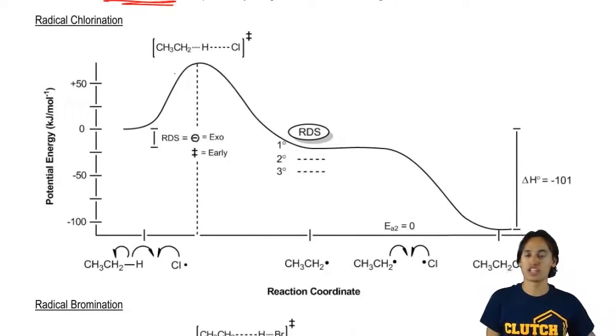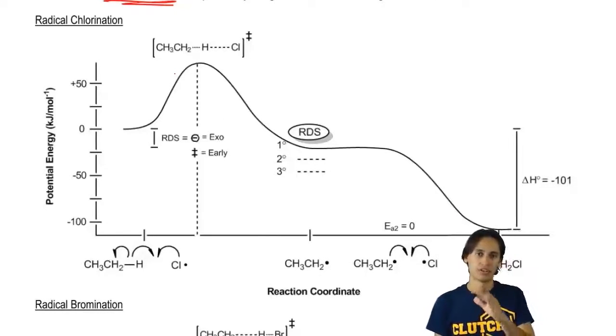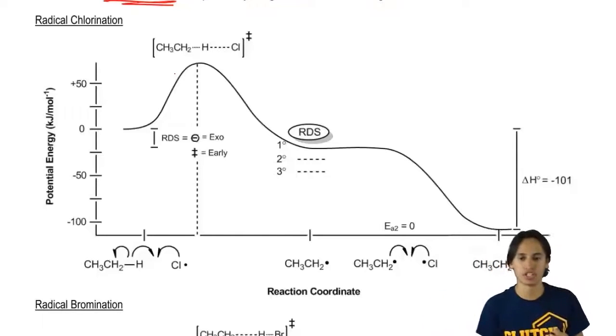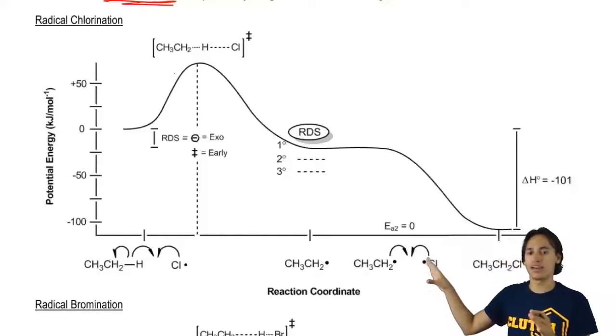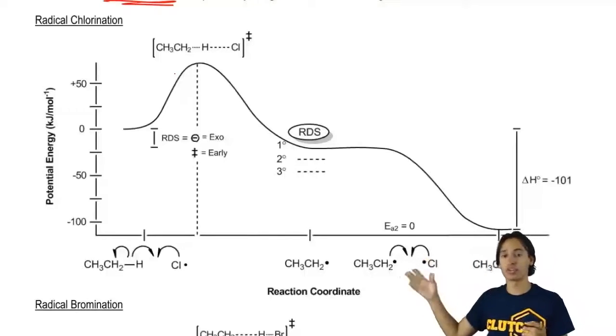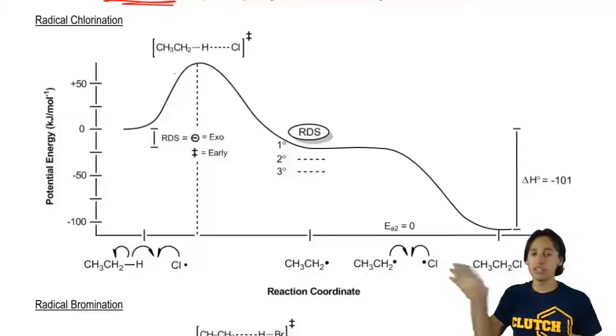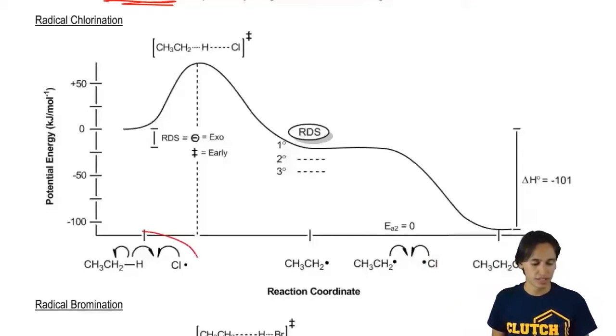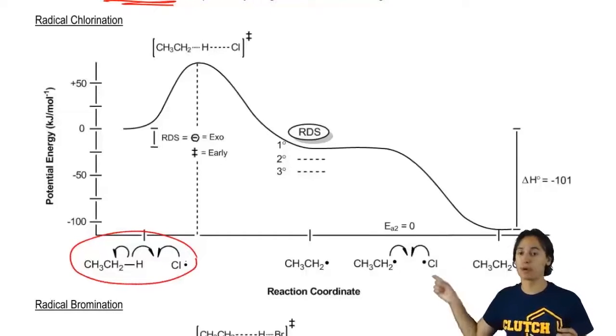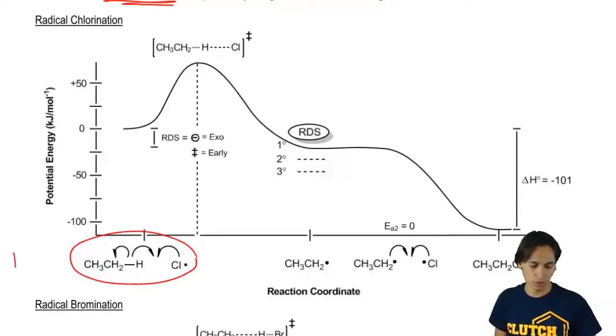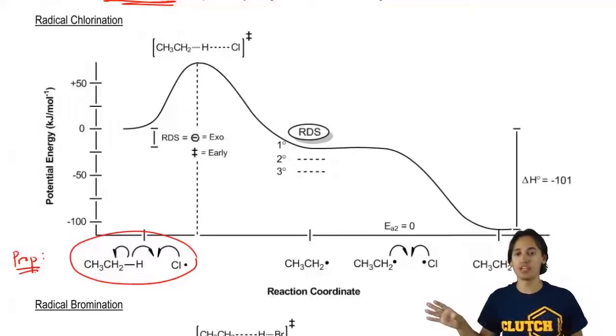First, I want to show you the reaction diagram or energy diagram for radical chlorination. Let's look at the x-axis first and the coordinates. Notice that all of these things should look familiar. This is the first step of my propagation phase. This is all propagation here. I'm just going to put prop. So I've got my propagation phase.